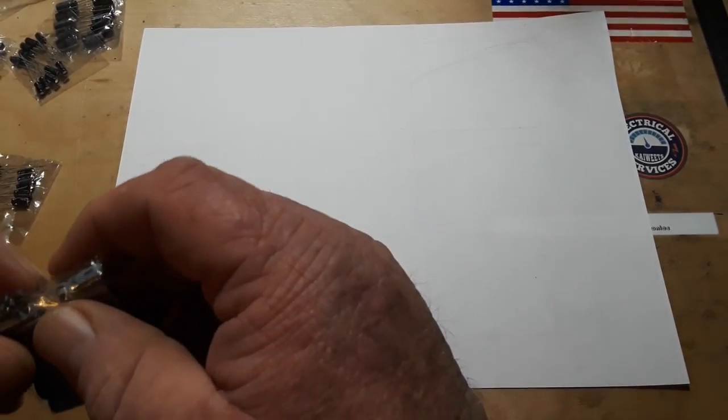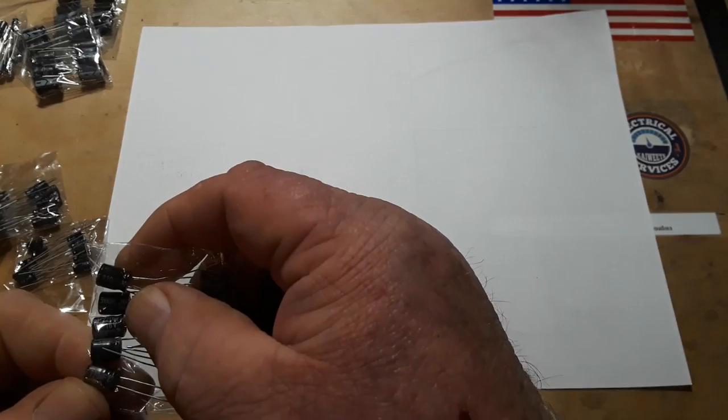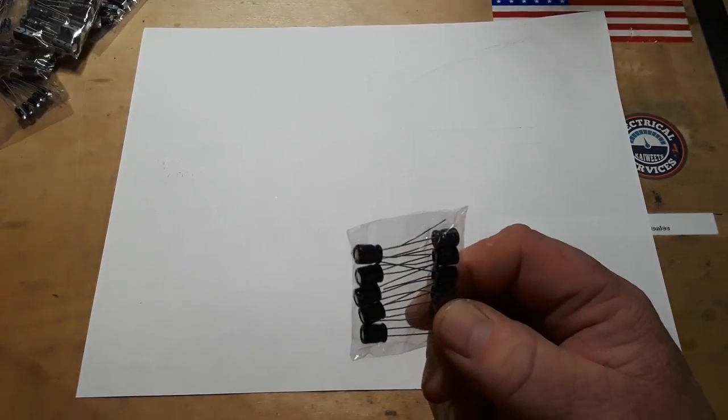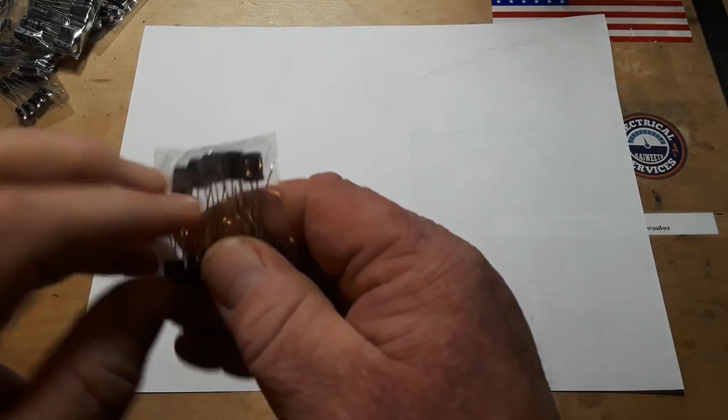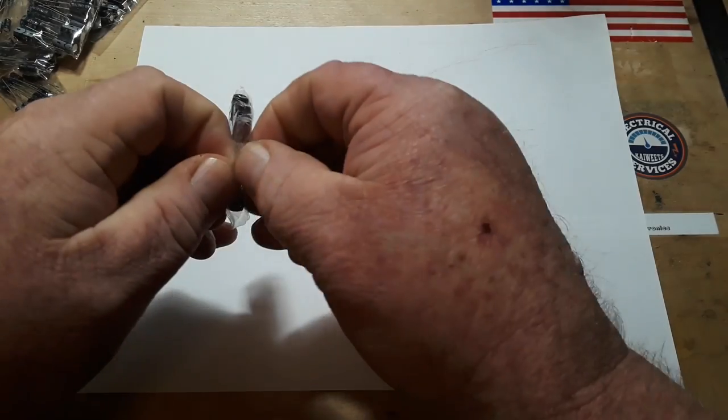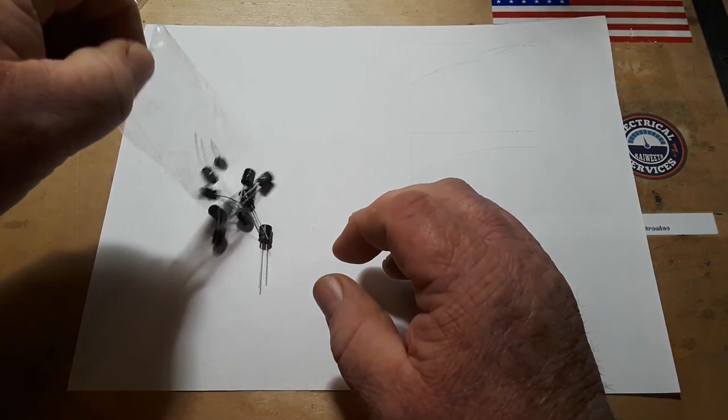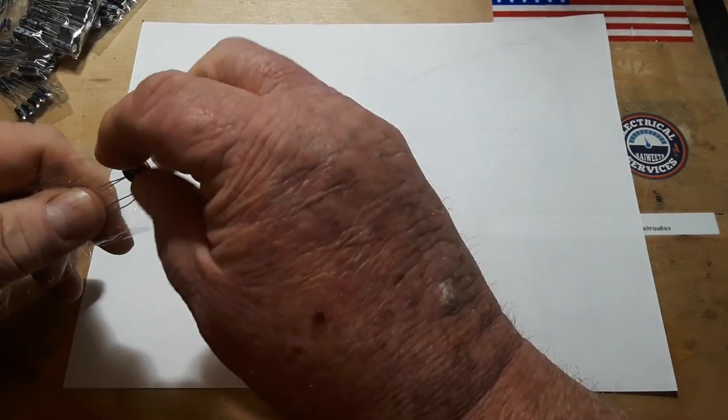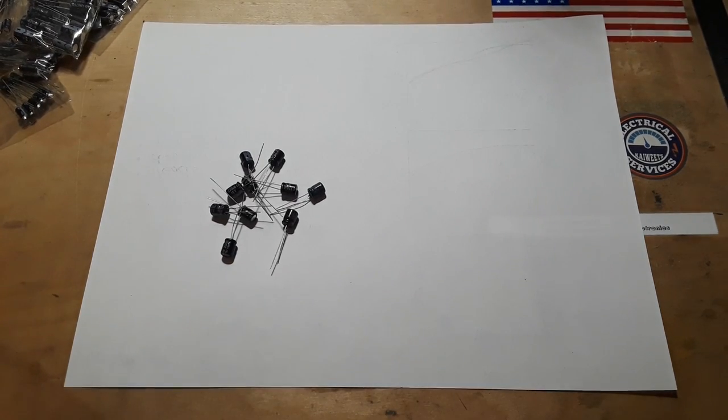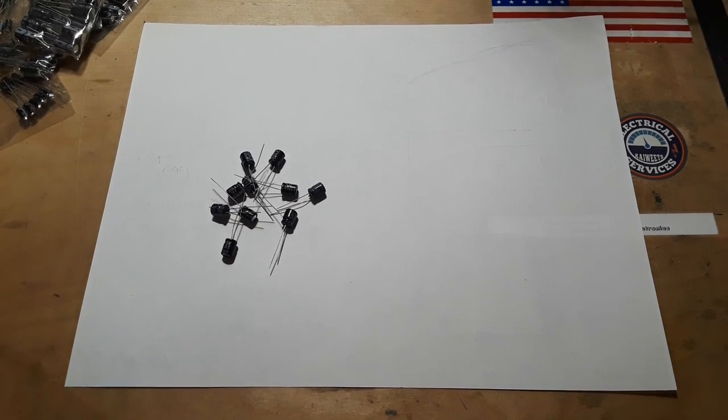There's a 330. Let's get a big one so it's easy to see. 470. I don't want to go quite that big. Here we are. 220 microfarad. And these are 22 volt. I'll open this bag here. So we're going to have a look at these.